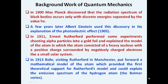Following up in 1911, Rutherford performed experiments shooting alpha particles at a gold foil and explained the structure of an atom as consisting of a heavy nucleus with positive charge surrounded by negatively charged electrons, like a small solar system.